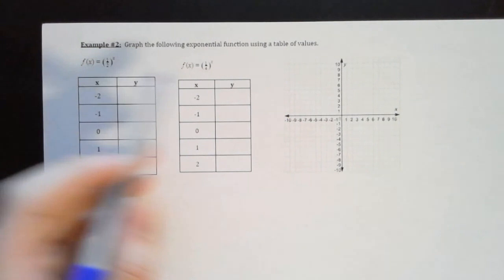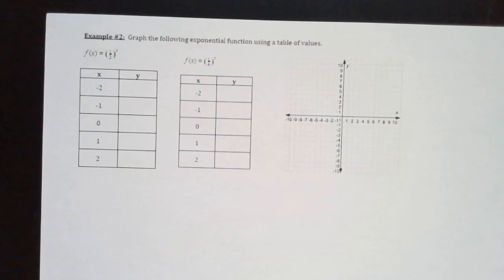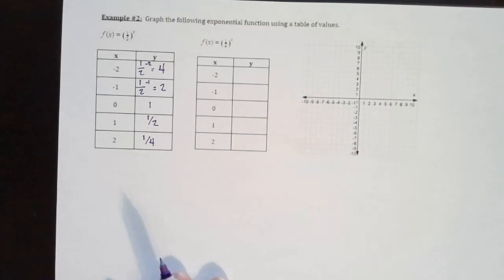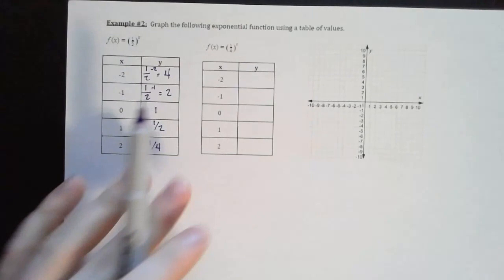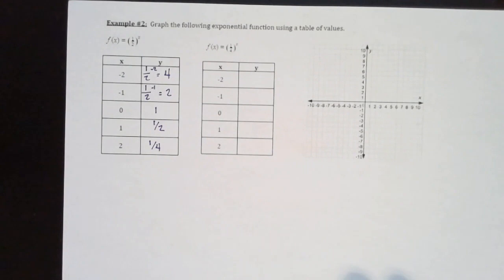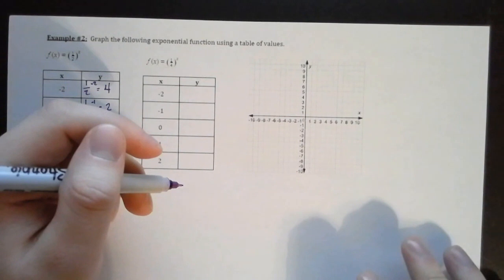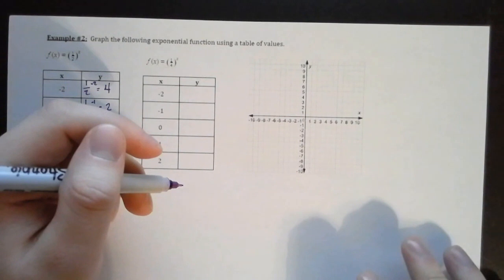Let's look at Example 2, which has fractional b values: b = 1/2 and b = 1/4. I'll fill out the table for b = 1/2. This is what your outputs should be. Since we have a fraction and we're plugging in a negative exponent, the negative exponent moves it to the numerator. So our negative exponents are going to give us larger outputs, and our larger positive exponents are going to give us these fractional outputs. We have the coordinates: (−2, 4), (−1, 2), (0, 1).